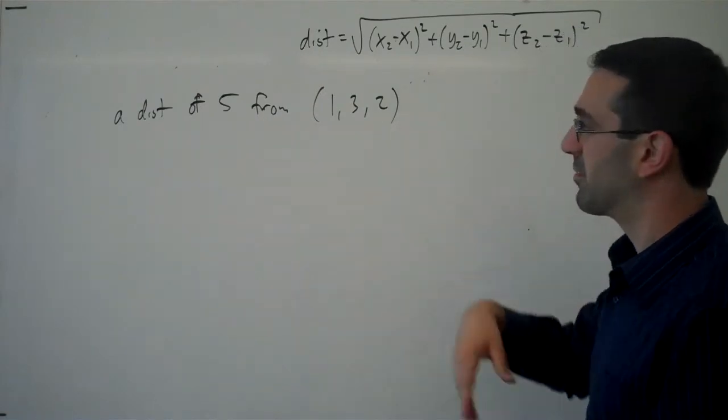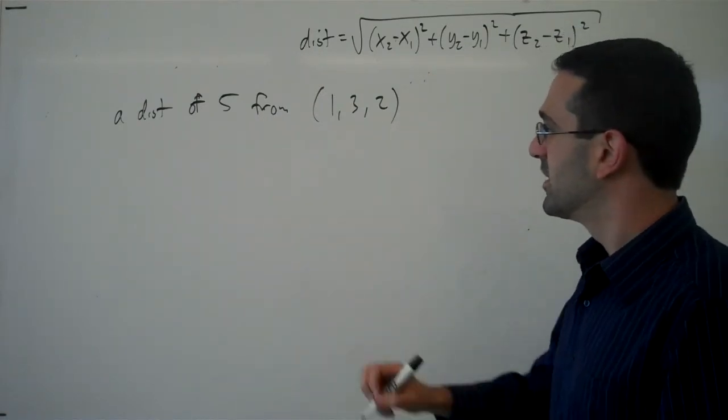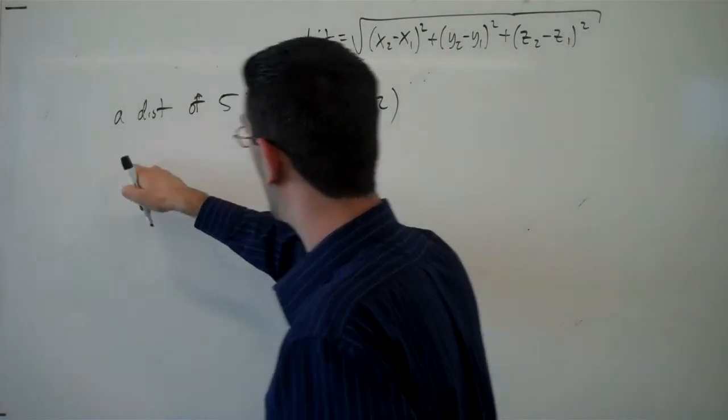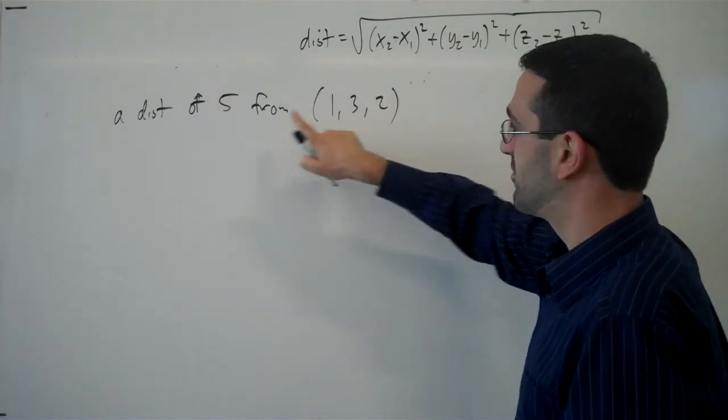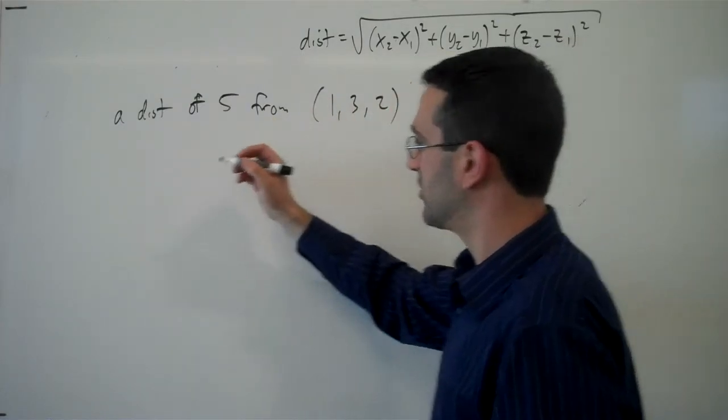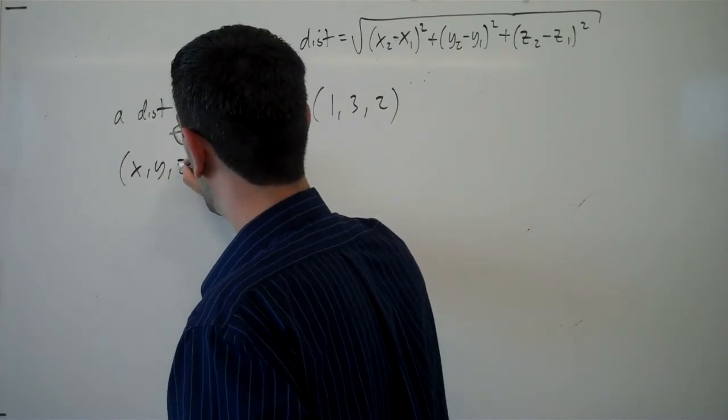Now let's use our distance formula to find an equation. So, if a point is distance of 5 from 1, 3, 2, let's call the point x, y, z.